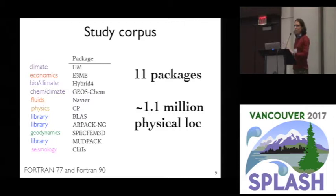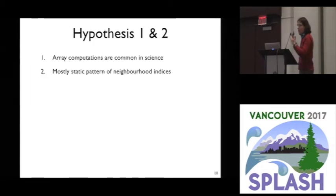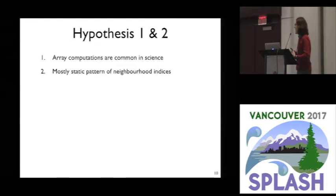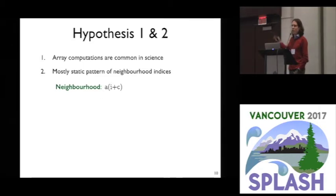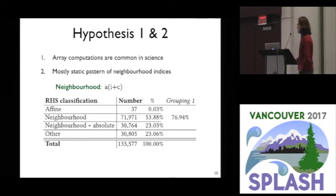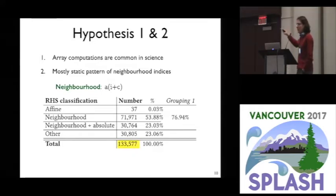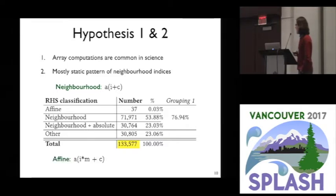We designed a tool for doing large-scale analysis of array programming idioms over this corpus. Some of our initial hypotheses included the general folklore idea that array computations are very common, and our observation that mostly arrays are read with a very static fixed pattern based on what we call neighborhood indices — that's when you have an induction variable and do some constant offsets from it. We found there are 133,000 array computations involving a single array at a time over our 1.1 million lines of code. So yes, they're pretty common.